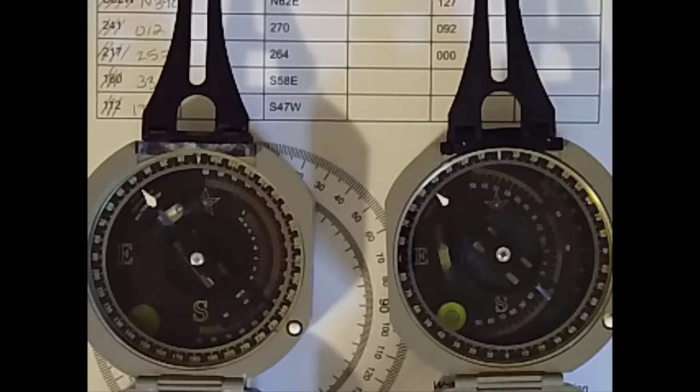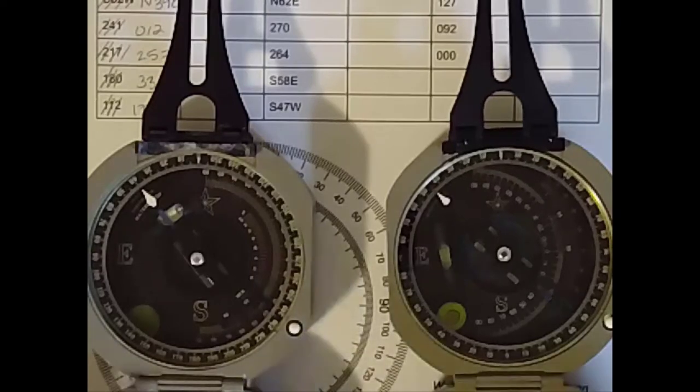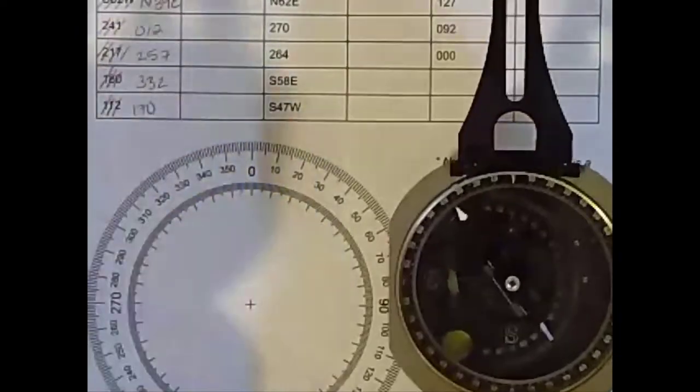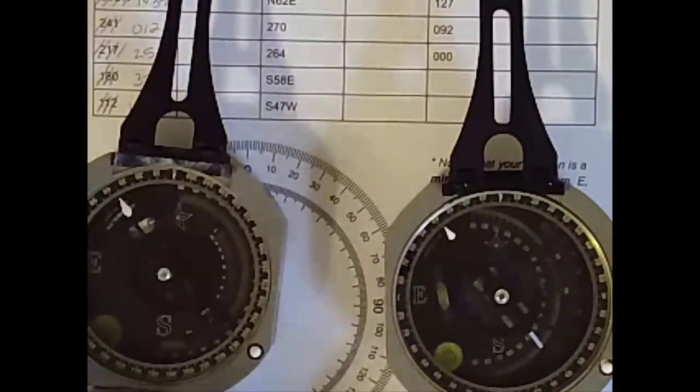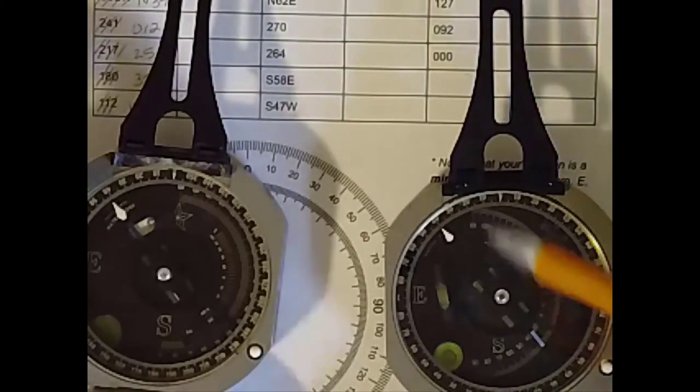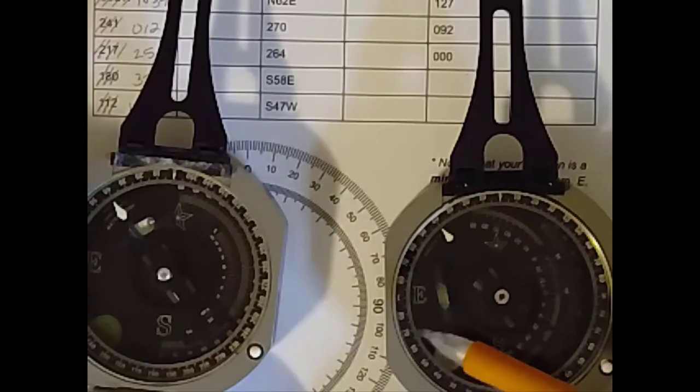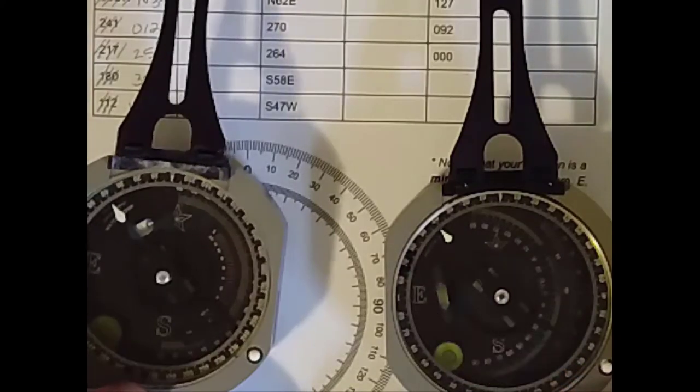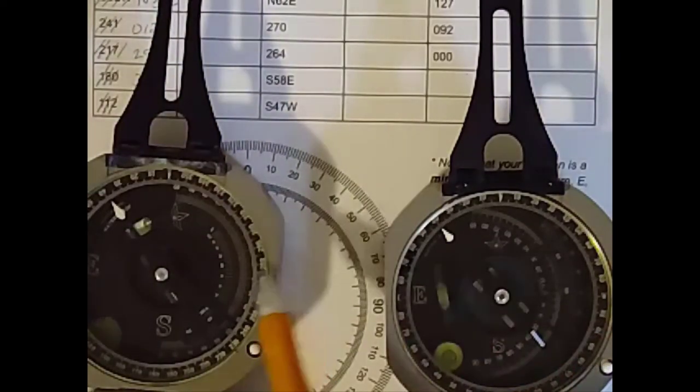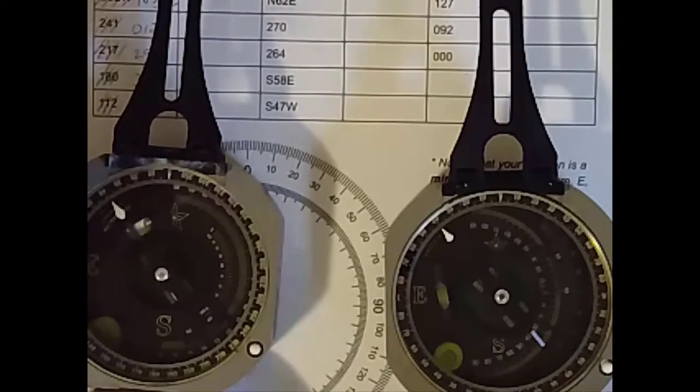So usually, you'll have to convert between these two, especially if you're in a department that has kind of a mix of Bruntons, where people have accumulated Bruntons over time. Some people will prefer one or the other. And you're going to be left having to know how to use both. So notice here, just before we move on to actually looking at what these look like when we start to convert, notice that 90 and 90 are both east, 180, and zero is south, and that 270 and west are in the same positions.